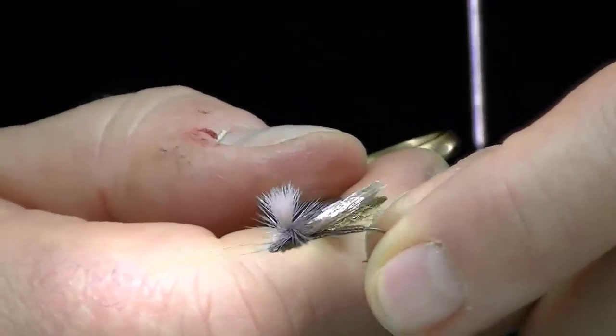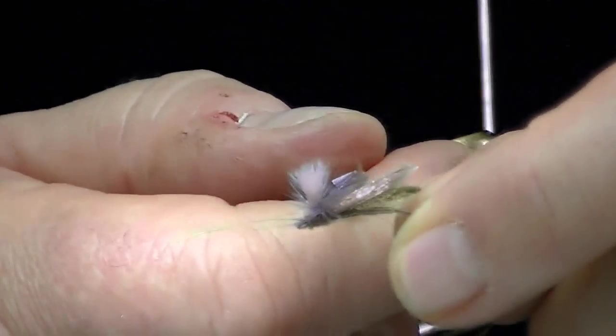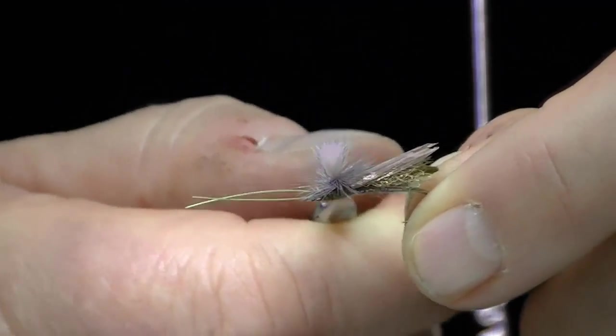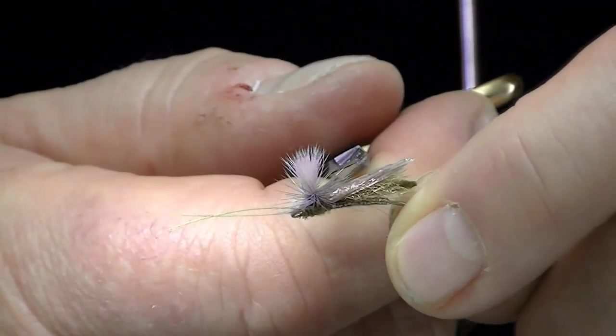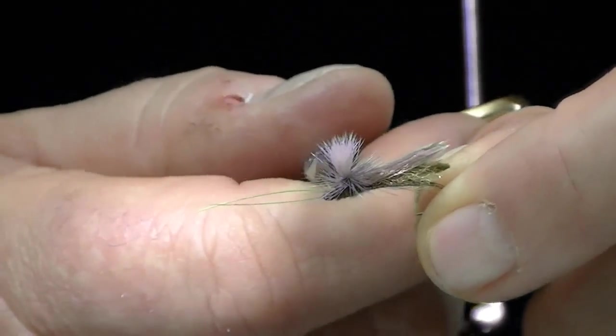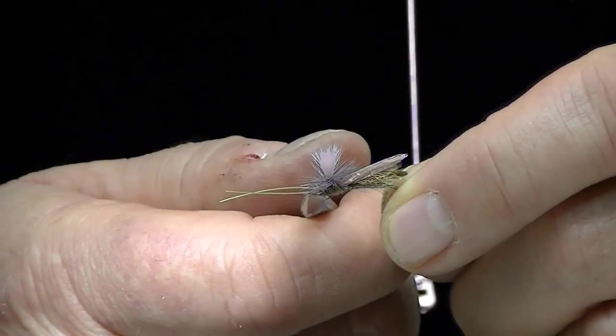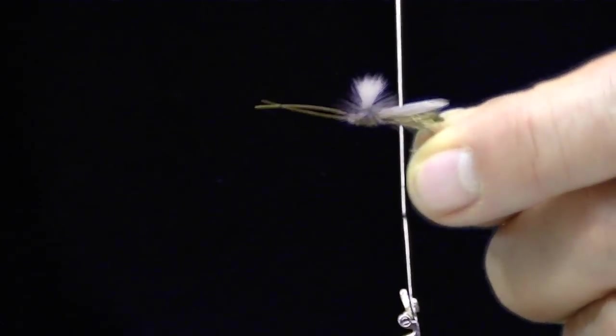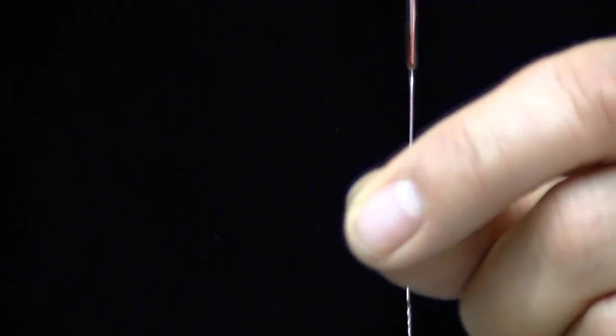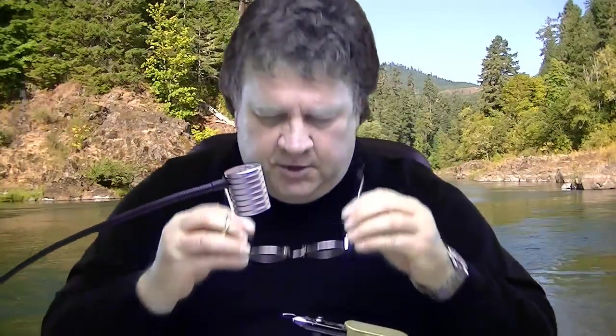You've got a macro chenille body to it, a little bit of CDC and sparkle yarn under that. We've got a wing made out of calf body hair, a hackle and a little antenna. It's a fairly complicated fly but it's really fun to tie. You'll learn a lot when you do it.